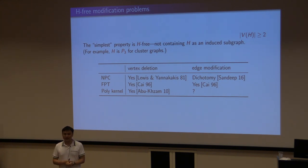Let's consider H-free modification. So here by H, we mean a single graph. Just a small but crucial point is H has at least two vertices, otherwise it's trivial. For example, in the first slide, the cluster graph just happens to be the P3-free graphs. It does not have any path on more than two edges. For H-free, the situation is a little bit better. For vertex deletion, we know it's NP-hard. For edge modification, we do have a dichotomy.